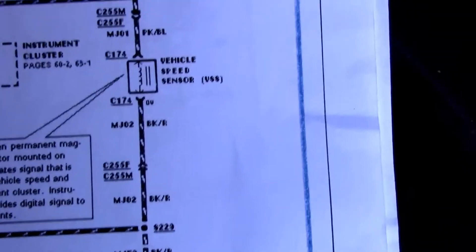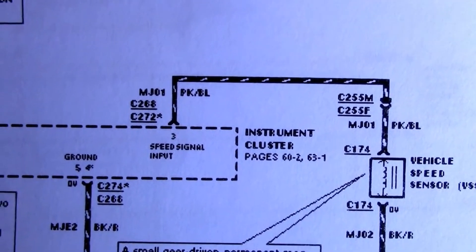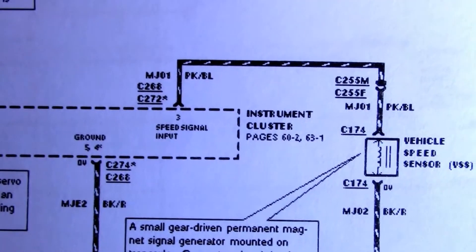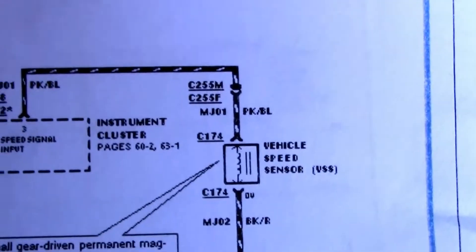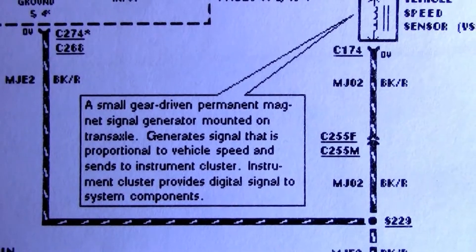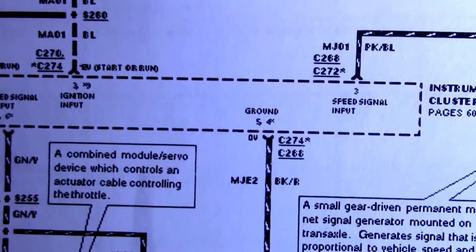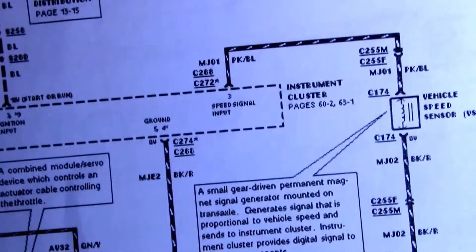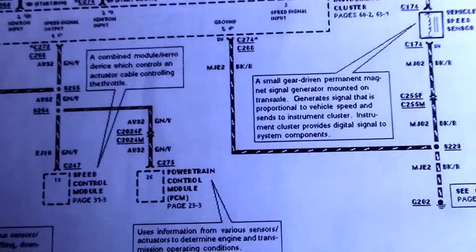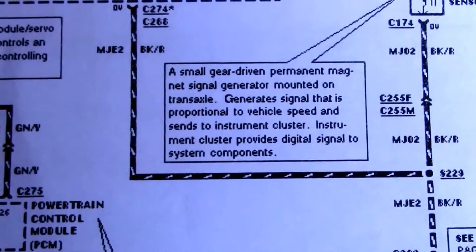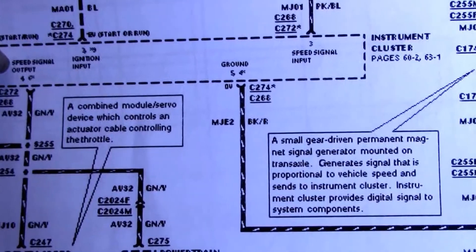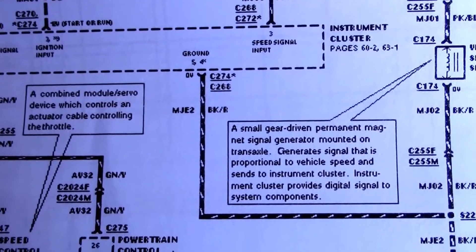According to the diagram, we have the vehicle speed sensor here, sending a signal to the instrument cluster on pin 3 — the speed signal input. It gives a brief description of what the speed sensor does. Then the instrument cluster processes this input signal and sends it to the cluster gauge and also to the computers.